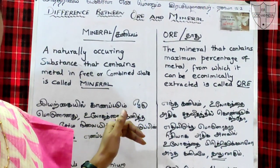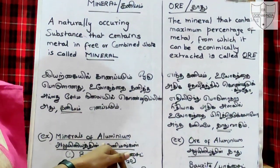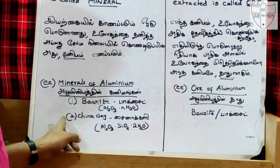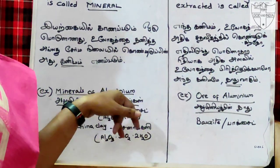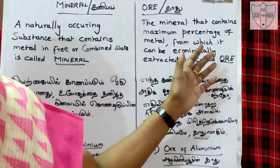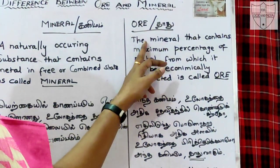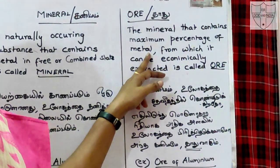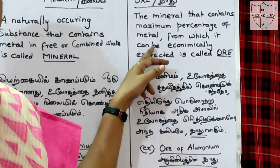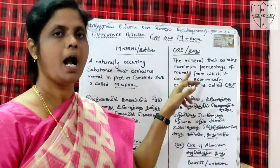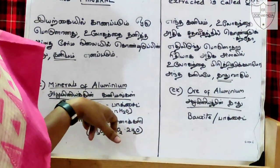A naturally occurring substance that contains a metal in a free or combined state is called a mineral. One example is magnesium minerals, another is aluminium minerals. This is titanium minerals — which includes china clay and stone. Now, the mineral that contains the maximum percentage of metal from which it can be economically extracted is called an ore. Aluminium has two minerals; one is bauxite and another is china clay.